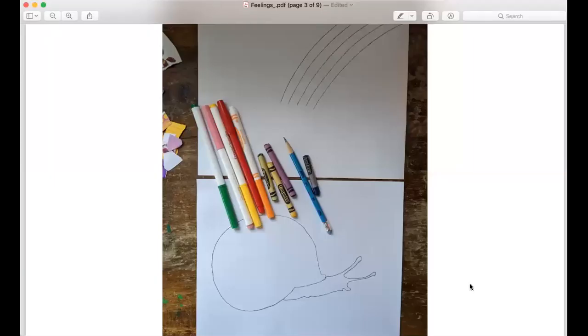Here are the materials that you're going to need today. I printed out both pictures, the snail shell picture and the rainbow picture, but you can print out just one or if you don't have the printout you can just draw it.